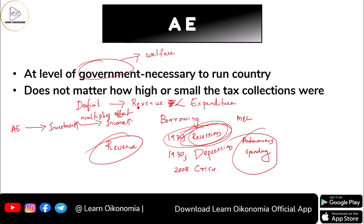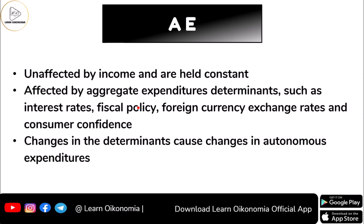Autonomous spending has its own role in the economy, but we have to understand that it is not affected by income. Even if the government's income is zero, autonomous spending would be there and it would be constant. The government has to maintain that particular level of spending for the economy. However, even though it is unaffected by income, it does get affected by other factors — such as the interest rate, the type of fiscal policy, the economic scenario, foreign exchange rates, and consumer confidence.